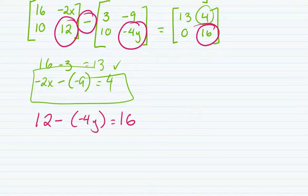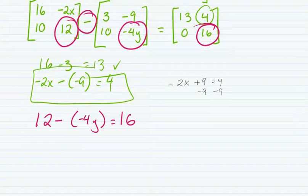And then I want to go ahead and solve both of these. So if negative 2x plus 9 equals 4, I need to subtract 9. Negative 2x equals negative 5. Divide each side by negative 2. x equals negative 5 over 2, which reduces to 5 over 2. You don't need to write the negative signs, they cancel out.